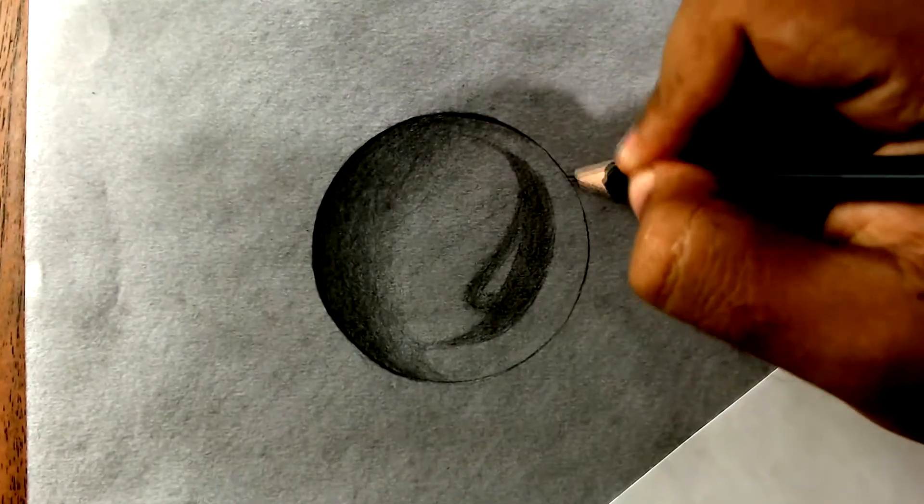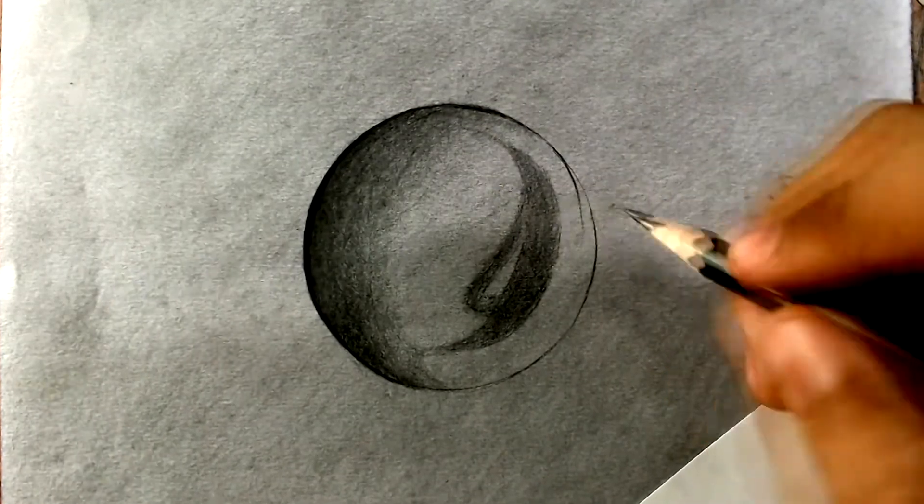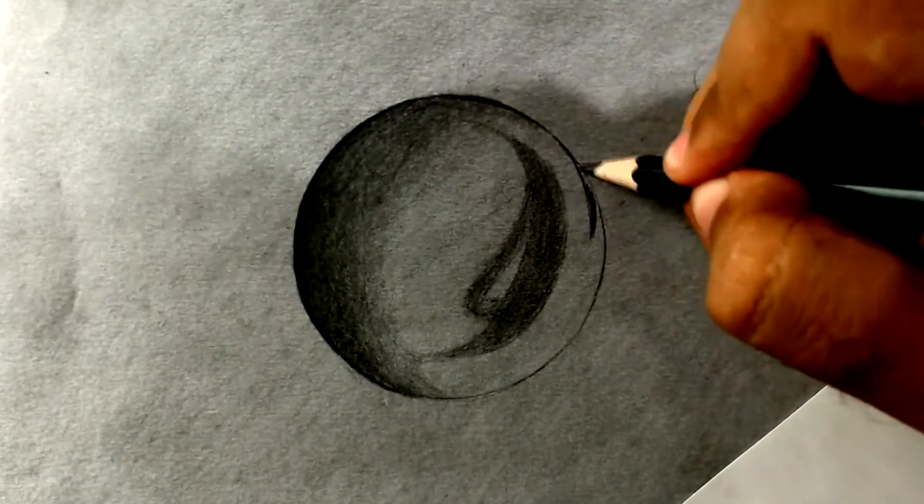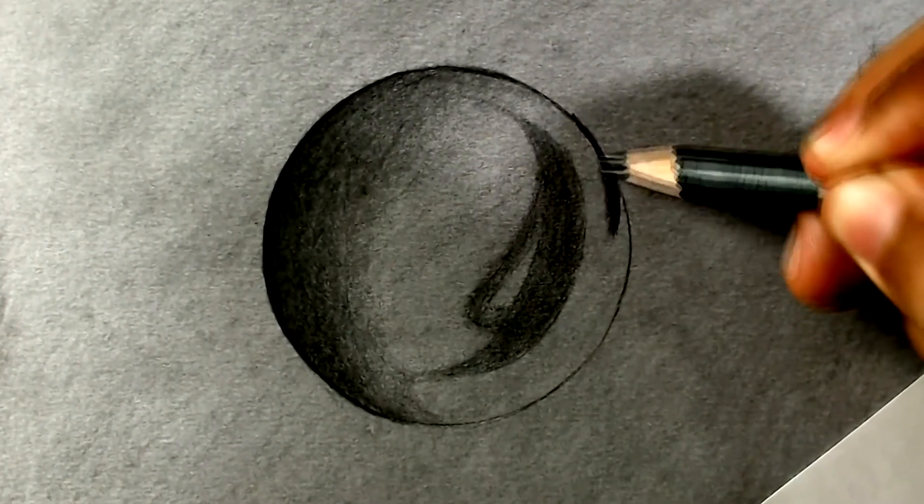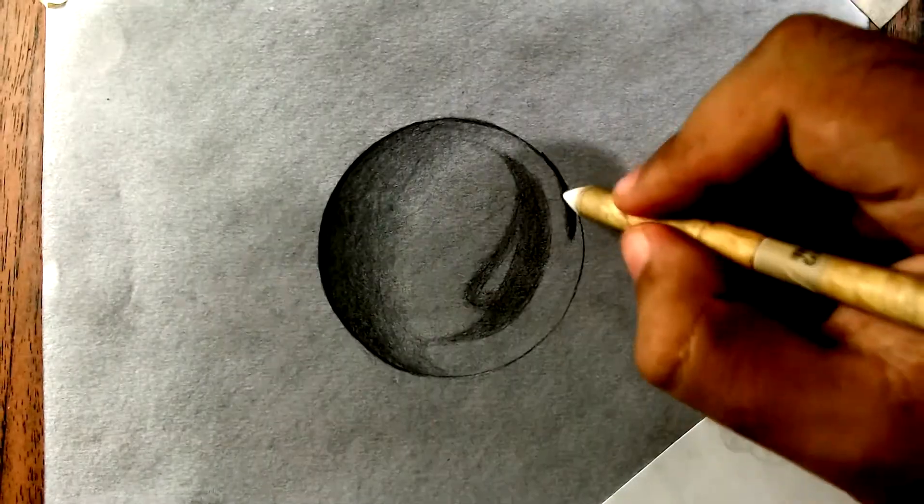Using the same 4B pencil, we'll create a dark detail around here and create a transition with the pencil and smooth this transition with the blending stump.